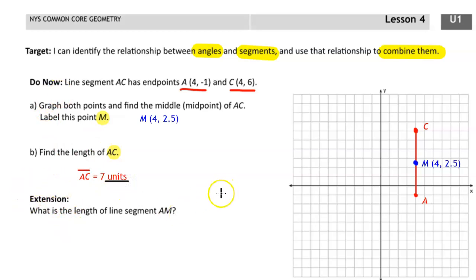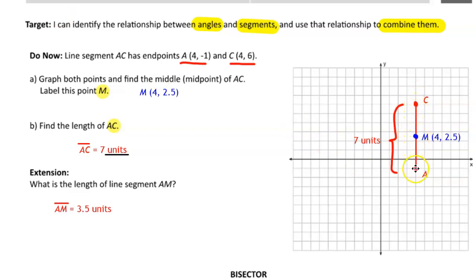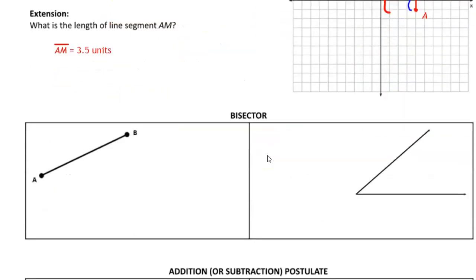The extension question asks what is the length of line segment AM. Since we counted seven boxes from A to C, from A to M would be half of that distance, because M is the midpoint. So the length of AM is 3.5 units. You should recognize that the entire length is seven units, and the length from C to M and from M to A is 3.5 units each. So 3.5 plus 3.5 equals seven units — the entire length. If you understand this concept, you're already well on your way to understanding the addition postulate.